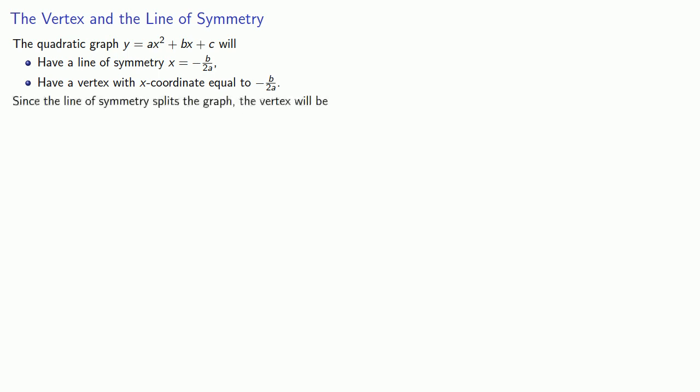Since the line of symmetry splits the graph, the vertex will be either the lowest point on the graph if a is greater than zero and the graph opens upward, or the highest point on the graph if a is less than zero and the graph opens downward.